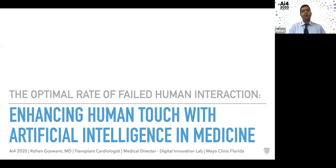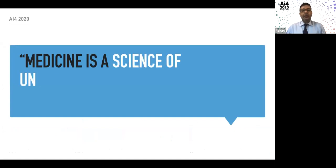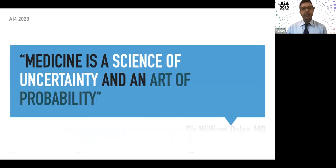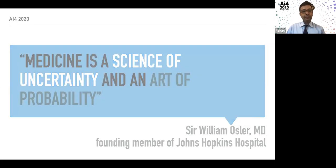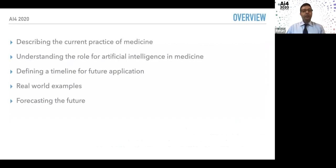We're talking about the optimal rate of failed human interaction and how we can enhance human touch with artificial intelligence in medicine. To start off, I want to talk about how medicine and artificial intelligence are a perfect symbiosis. This is a quote by Dr. Osler, one of the founding members of Johns Hopkins Hospital, who said that medicine is a science of uncertainty and an art of probability — which is exactly what AI and medicine have in common.